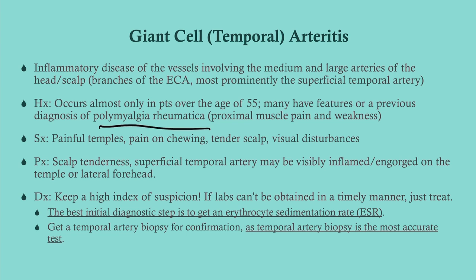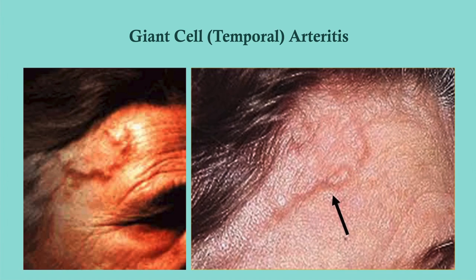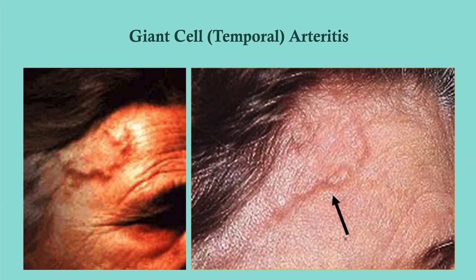This is that engorged superficial temporal artery that you may notice — sometimes it can be fairly obvious. Treatment is prednisone; the disease is self-limited, so prednisone is used to treat symptoms while it exists. Make sure to send these patients to ophthalmology because it can result in long-term visual complications.